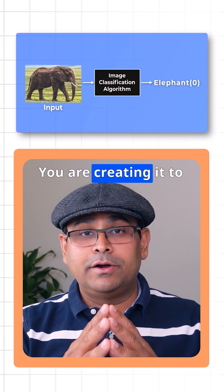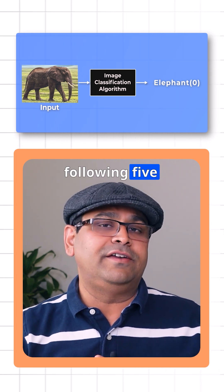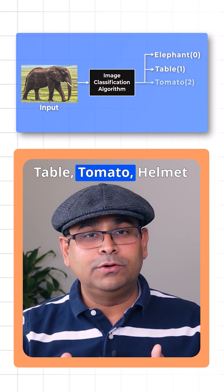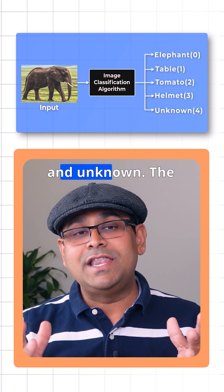You are training it to output one of the following five categories: Elephant, Table, Tomato, Helmet, and Unknown.